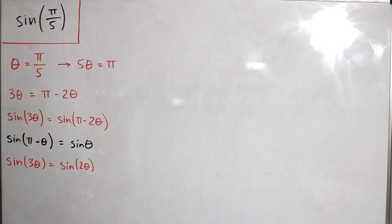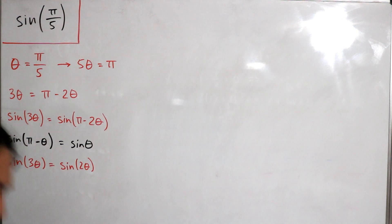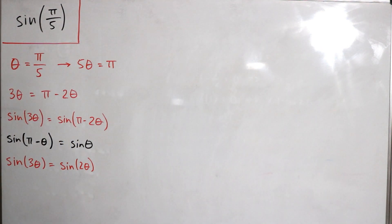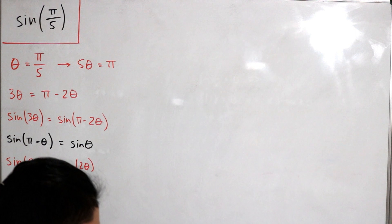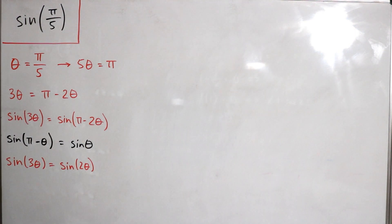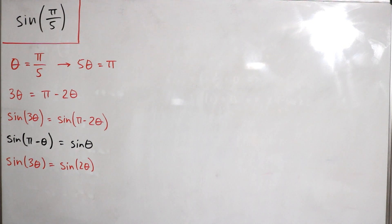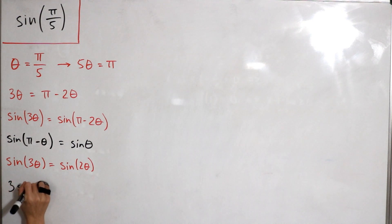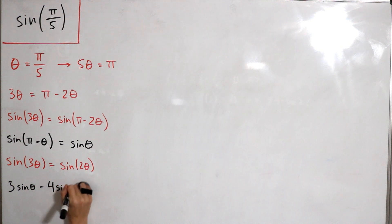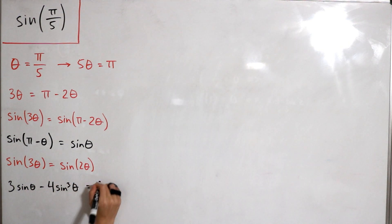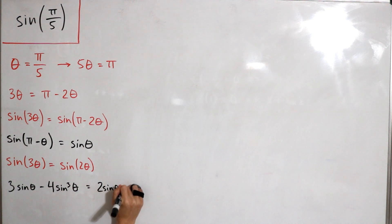From here, we'll use two different trig identities: the triple angle identity and the double angle identity. The double angle identity for the right-hand side gives us two times sine θ times cosine θ. For the left-hand side, the triple angle identity — which I didn't learn in high school, just the double angle — says we can write sine of three θ as three times sine θ minus four times sine cubed θ.